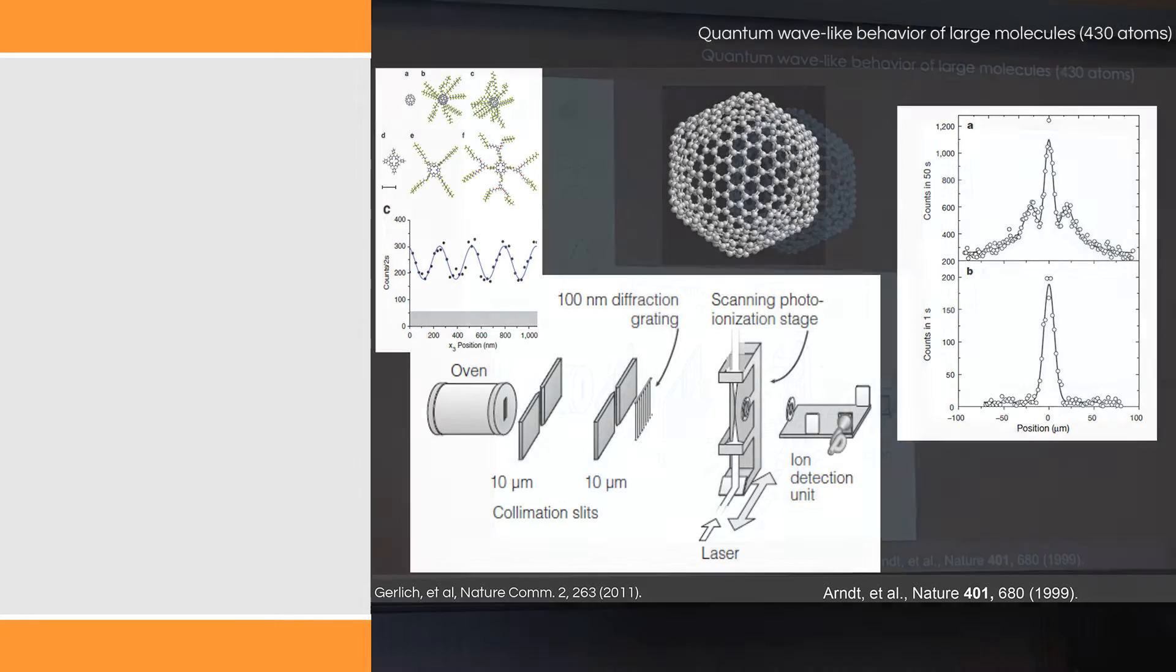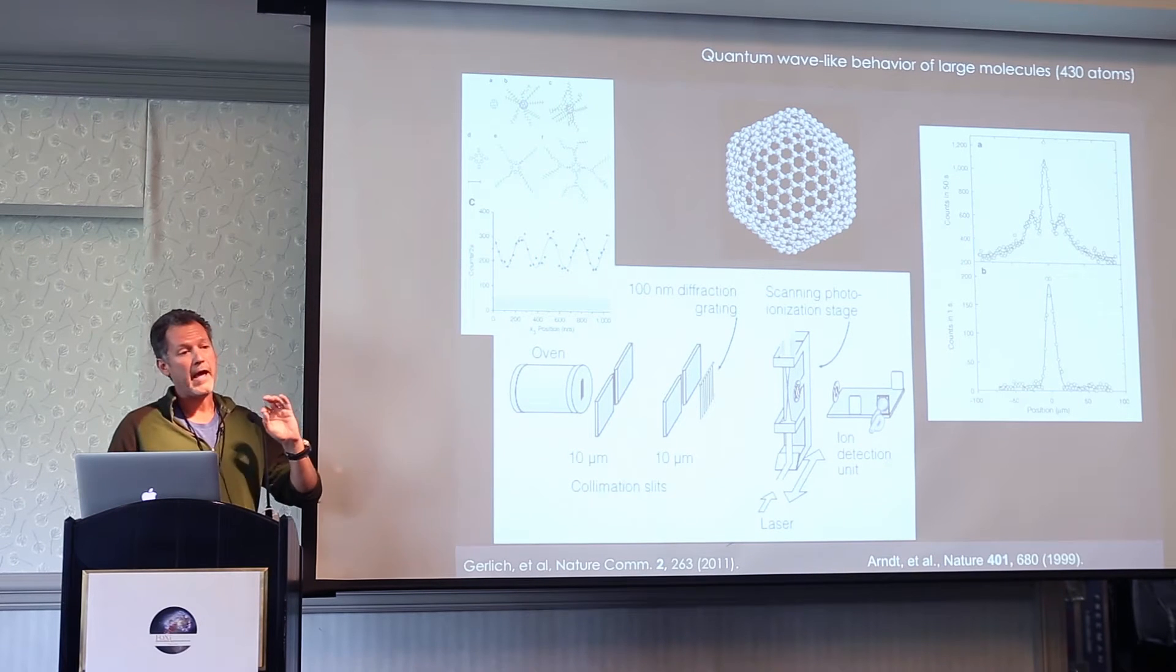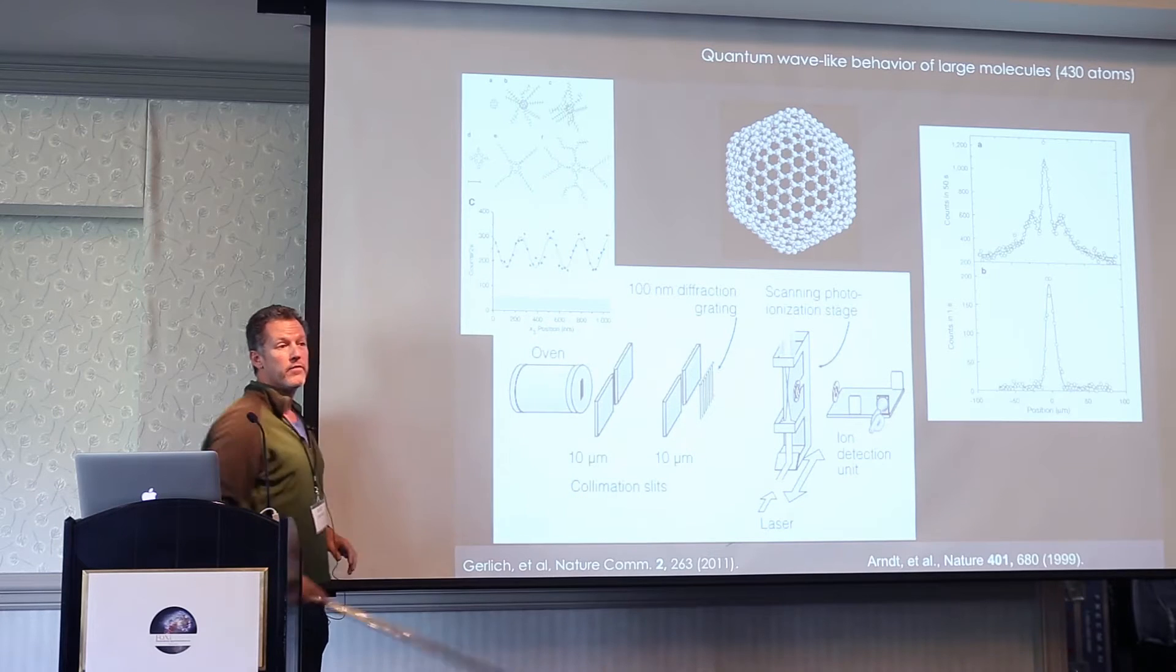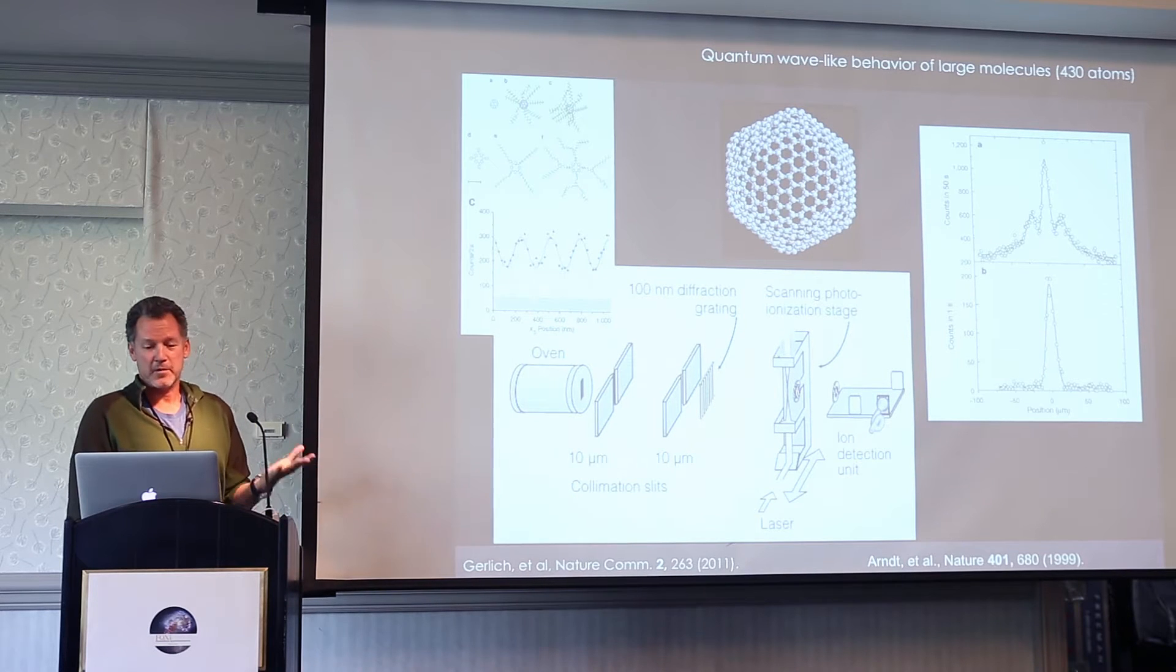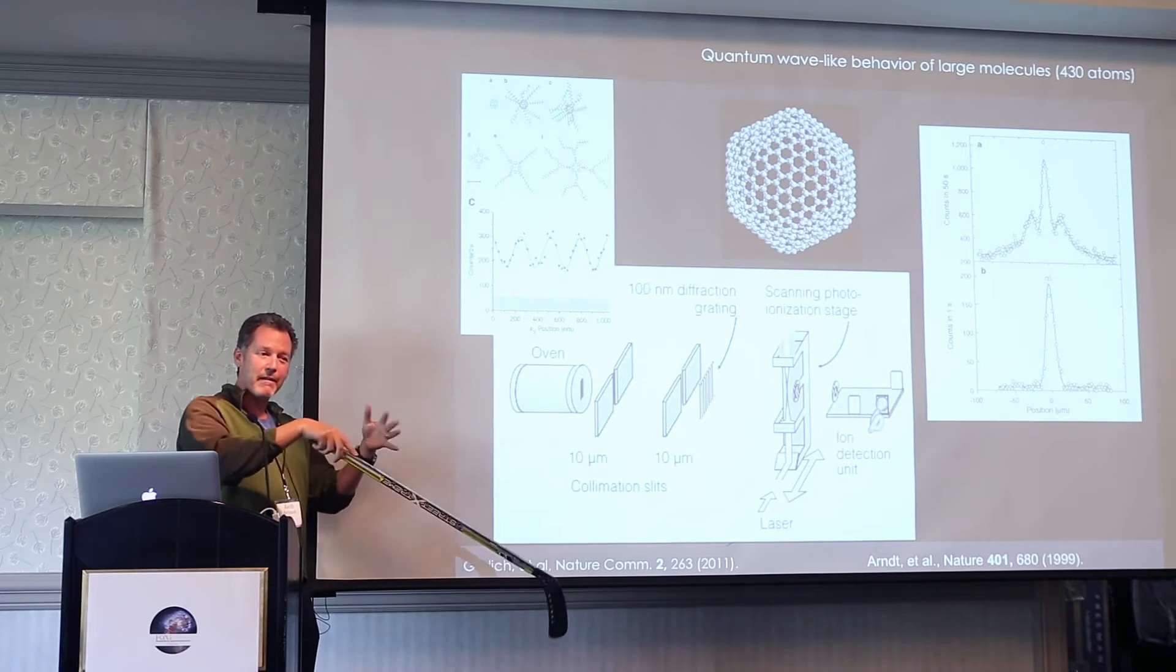When you talk to these guys, their goal was to eventually have virus particles diffracting on the slits of their device. But it turns out the van der Waals interaction of the larger particles interact with the slits—the slits start acting like lenses and the interference becomes obscure.